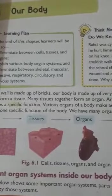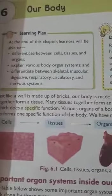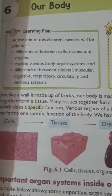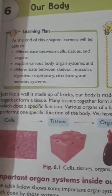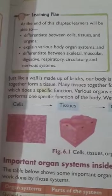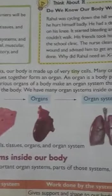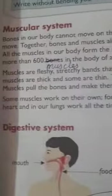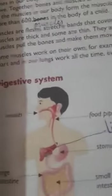Assalamualaikum children, welcome to the science class for Grade 3. This is Lesson 6, 'Our Body,' and this video is Part 3. In the previous videos we have studied about cells, tissues, organs, and organ systems. In organ systems we have seen the skeletal system and muscular system.